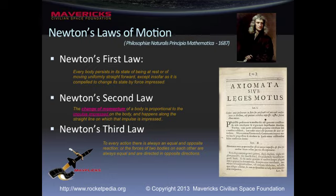Newton's second law is where we start to get a little deviation from the way we were taught it in most classes. We've always been taught that Newton's second law is F equals ma — force equals mass times acceleration. And while that's true, that's a special case of what Newton said. What Newton actually said in his second law is that the change of momentum of a body is proportional to the impulse impressed on the body, and happens along the straight line on which the impulse is impressed.